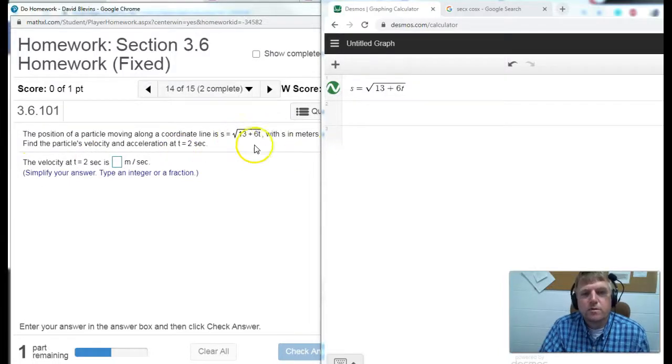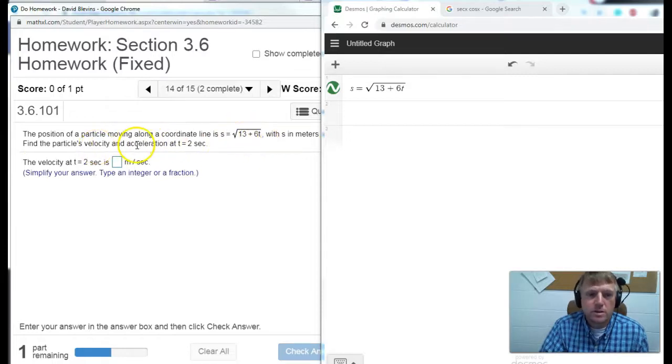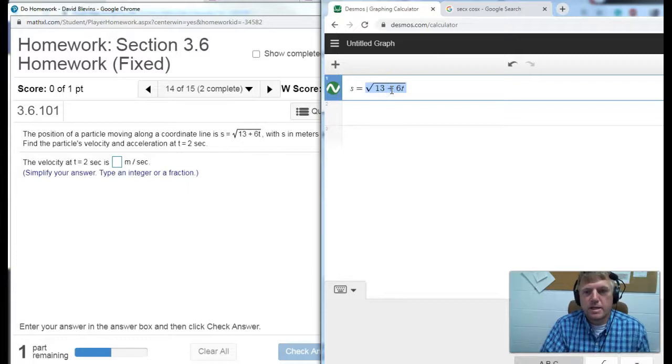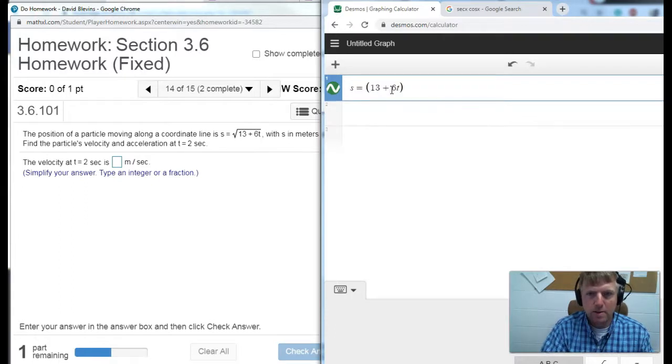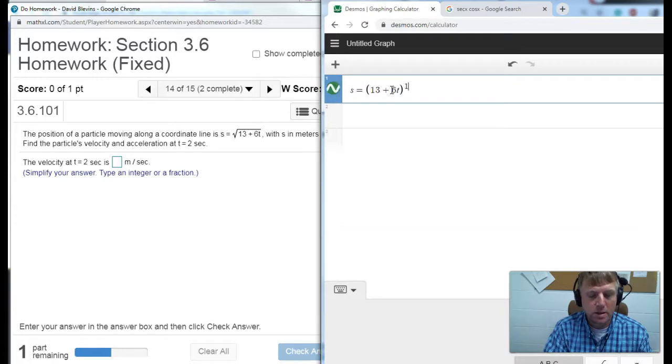Alright Calc class, one more example of the chain rule problem set. So we've got a position function and remember velocity is a derivative of position, acceleration is a derivative of velocity or the second derivative of position. So I've got this radical version of this. I'm going to rewrite this as a power. So I'm going to say this is 13 plus 6t and remember the square root is the same thing as the 1 half power.